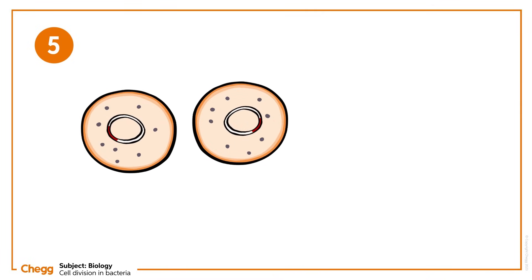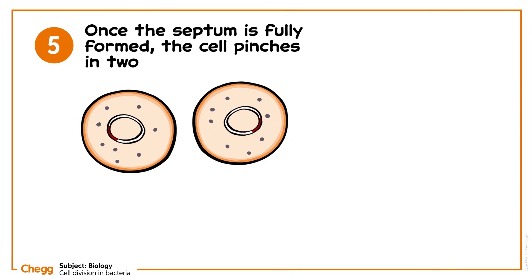Finally, there's step 5. Once the septum is fully formed, the cell pinches in two, and FtsI spreads through the cytoplasm of the new daughter cells. And we now have two individual bacteria with identical genetic material ready to live their lives.